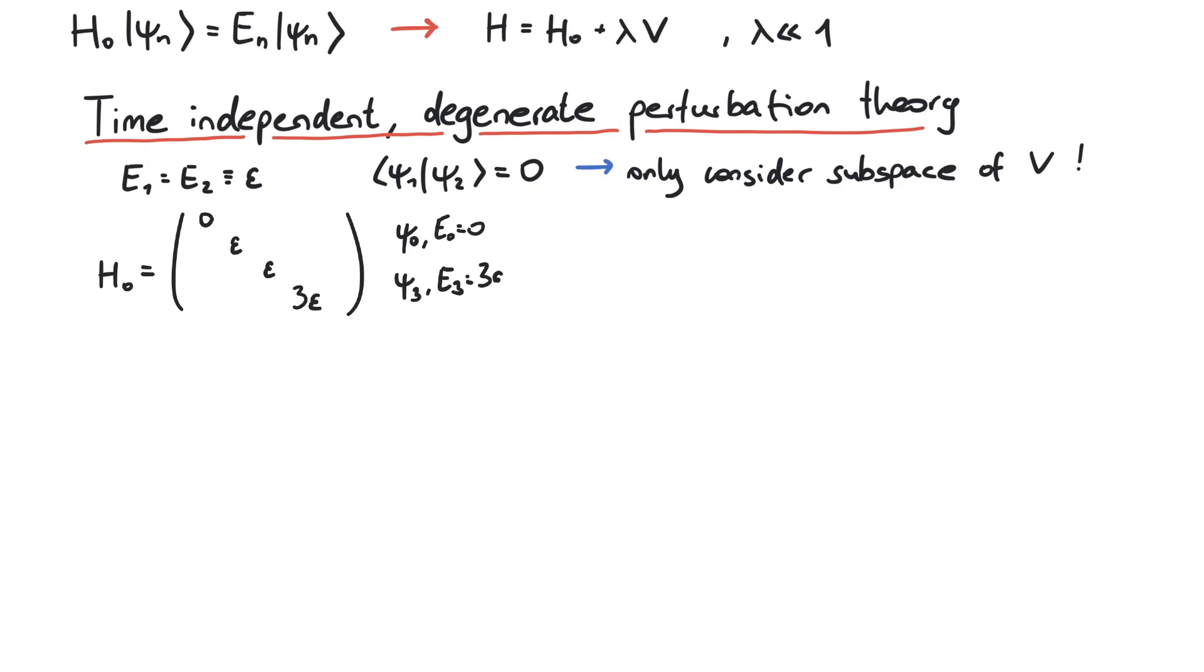So for psi0 and psi3, we apply non-degenerate perturbation theory. But here, we have a degeneracy. This means, however the potential may look like, we only consider this 2x2 matrix.